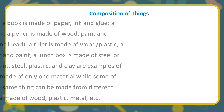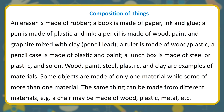Composition of things: an eraser is made of rubber. A book is made of paper, ink, and glue. A pen is made of plastic and ink. A pencil is made of wood, paint, and graphite mixed with clay — this is called pencil lead. A ruler is made of wood or plastic. A pencil case is made of plastic and paint. A lunchbox is made of steel or plastic.